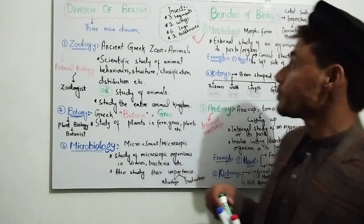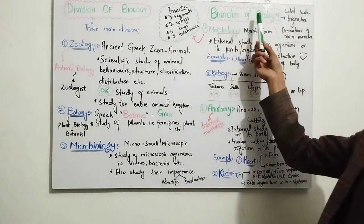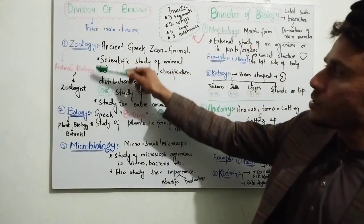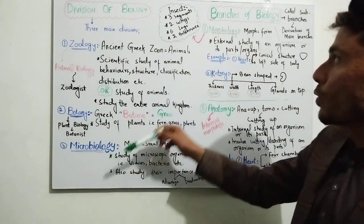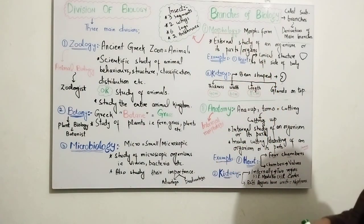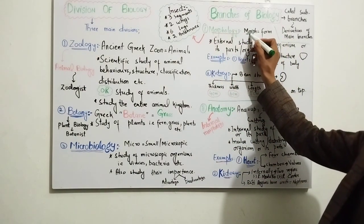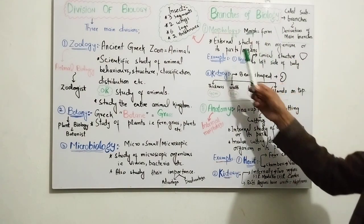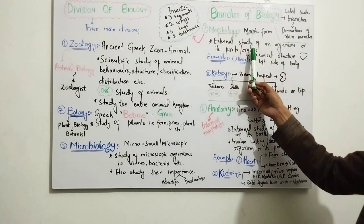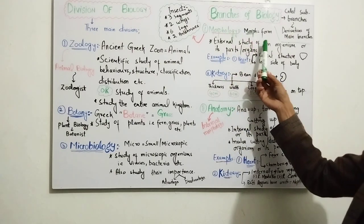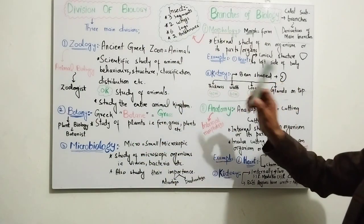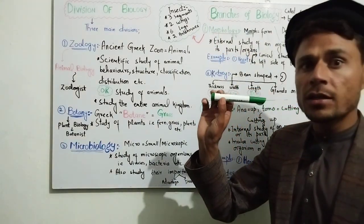The other part is the branches of biology — these are sub-branches used under the three main categories. The sub-branches are the most commonly studied areas under these three categories. The first branch is morphology, which comes from the Greek word. The study of the form and structure of an organism is called morphology.